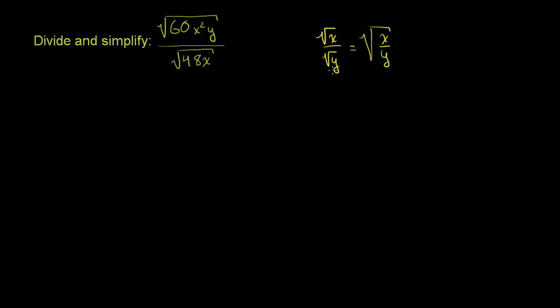And it really just comes out of the exponent properties. If I have two things that I take to some power, and taking the principal root is the same thing as taking it to the 1/2 power. If I'm raising each of them to some power and then dividing, that's the same thing as dividing first and then raising them to that power.